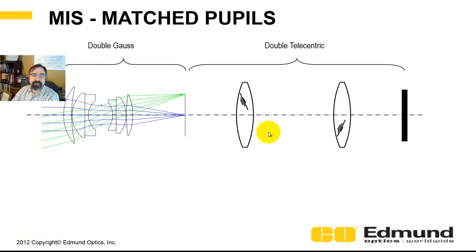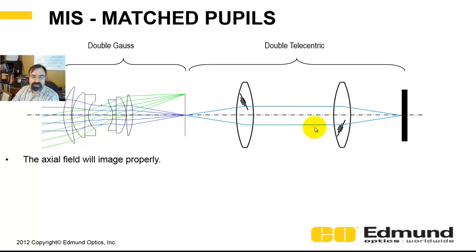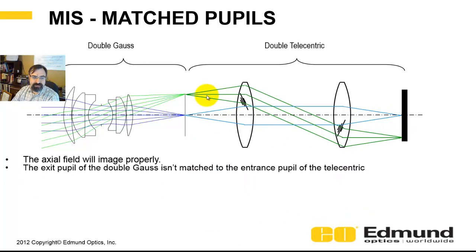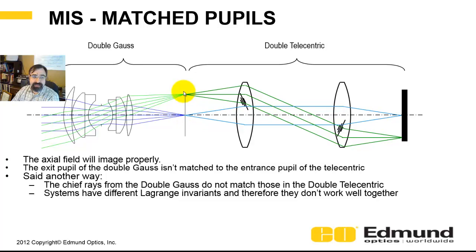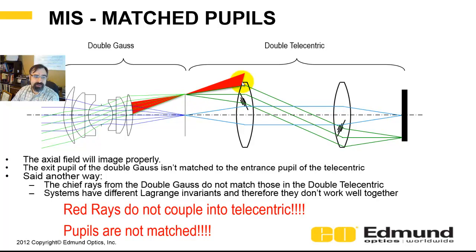Let's look at an example of a mismatched pupil. On-axis, everything's going to be fine — you'll get a nice on-axis image through. When you go off-axis, you need to match these pupils and chief rays, and in this case it's not happening. These triangles show that the off-axis light is not going to couple into the double telecentric — everything in that region is simply going to be lost. You're going to have low light illumination down on the edge of the detector, and you can increase or decrease aberrations and change your optical performance as well.